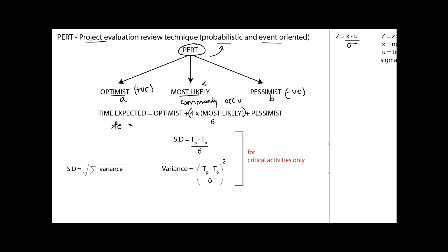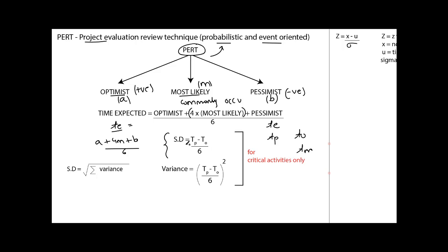In standard notation, optimistic is A, pessimistic is B, and most likely is M, so TE = (A + 4M + B) / 6. Standard deviation is given by (TP − TO) / 6, and variance is that quantity squared: ((TP − TO) / 6)². The overall standard deviation equals the square root of the sum of variances — the summation is over critical activities, which we'll see through an example.